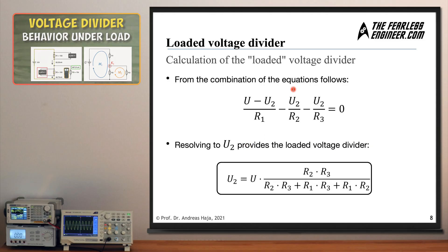From the combination of all these equations, we have eliminated all unknown voltages except U2. We replaced U1 with the expression from the first loop equation, and replaced U3 with U2 due to the voltage identity of the parallel resistors. Now with a single unknown U2, we solve the equation to arrive at the loaded voltage divider formula: U2 equals U times R2 times R3 divided by the appropriate combination of R1, R2, and R3. This gives the voltage drop across the bottom resistor based on the ratios of R1, R2, R3, and the source voltage.